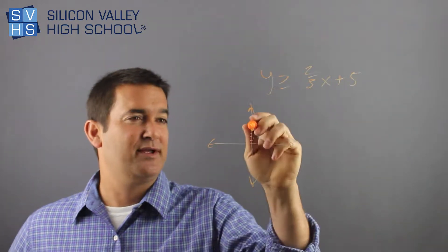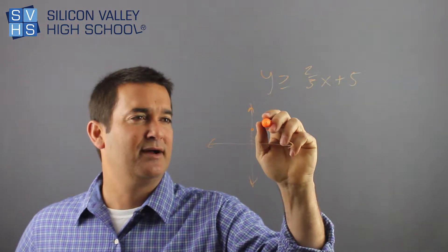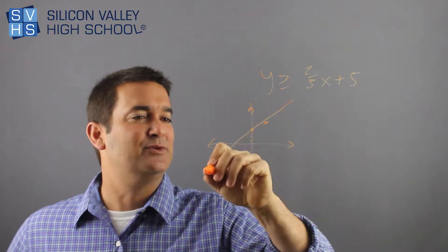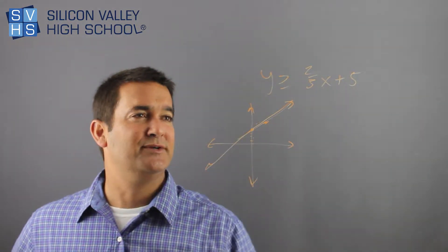And my slope is up two over three. One, two, over three. Everyone's happy. Solid or dotted line? This is a solid line because it's equal to, greater than or equal to.